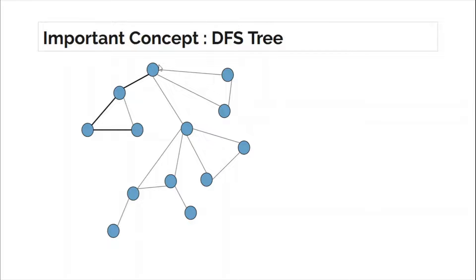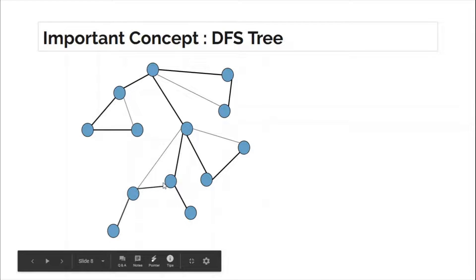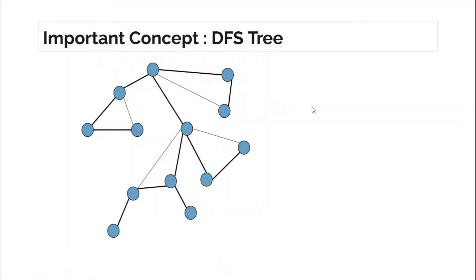We would backtrack from there, and then this part being traversed would make another recursive DFS call to another subtree. The same story repeats — two nodes in the adjacency list both already visited, so those edges won't get traversed; we backtrack again. Eventually we make DFS calls to all reachable nodes, backtrack through the entire tree, and return to the main function.